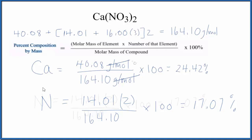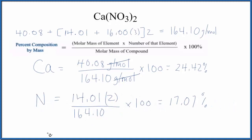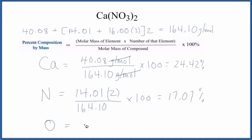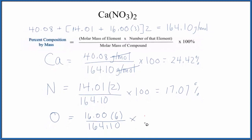Let's finish with oxygen. On the periodic table, oxygen is 16.00 grams per mole. We have two times three, so six oxygen atoms. Divide by the molar mass for the compound, multiply by 100, and we end up with 58.50%.